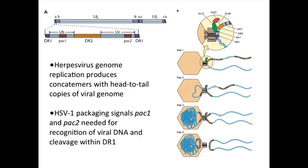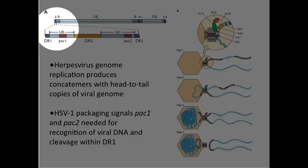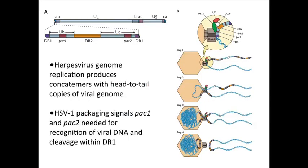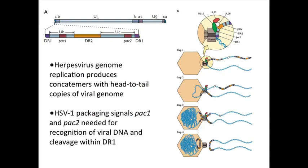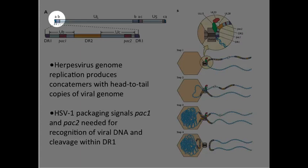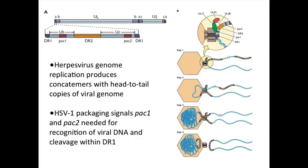Herpes virus genomes also have packaging sequences, located at the left end of the long double-stranded DNA genome. Here on the top is the entire genome; we're expanding the left end at the bottom. The packaging sequences are called PAC1 and PAC2, and they are part of an element called the A element at the very left end. You can see that A element repeated at the end of the UL region and at the other end of the genome. These two packaging sequences are needed for this viral DNA to get into a virion. The genome replicates as a rolling circle and makes head-to-tail concatemers — very long unit-length molecules — and that's the substrate for encapsidation.